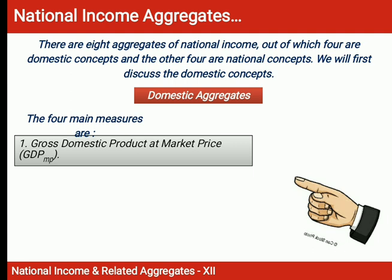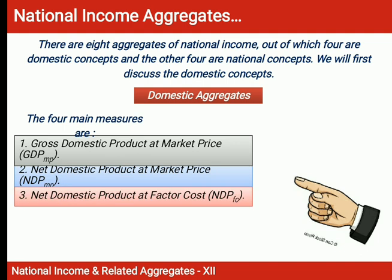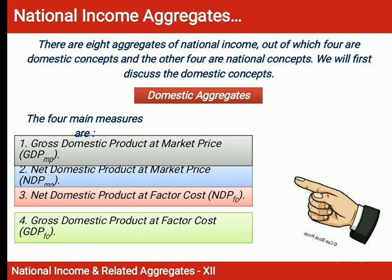What are National Income Aggregates? There are eight aggregates of National Income, out of which four are domestic concepts and four are national concepts. The four domestic aggregates are: GDP MP, NDP MP, NDP FC, and GDP FC.